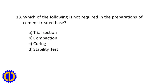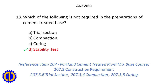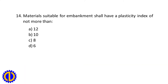Question 13. Which of the following is not required in the preparations of cement-treated base? A. Trial section. B. Compaction. C. Curing. D. Stability test. Answer: D. Stability test. Reference: Item 207, Portland Cement Treated Plant Mix Base Course, 207.3 Construction Requirement. Includes trial section, compaction, and curing.